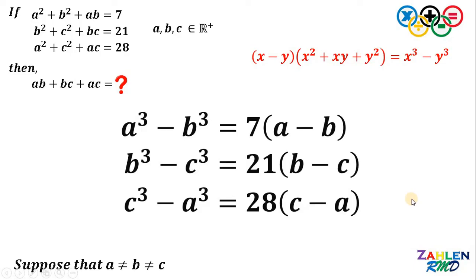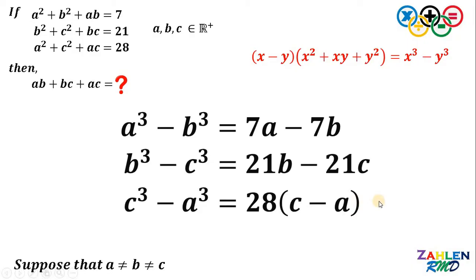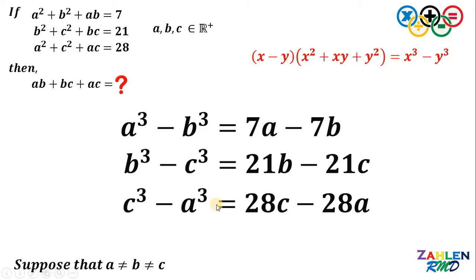Now, why do we do this kind of manipulation? Notice that if we add these three equations, a cubed and negative a cubed cancel out, b cubed and negative b cubed cancel out, and c cubed and negative c cubed cancel out. But before we add these three equations, let's simplify the right-hand side first. On the first equation, multiply by 7; on the second equation, multiply by 21; and on the third equation, multiply by 28. What we're going to do is add these three equations, and take note that the left-hand side must be equal to 0.